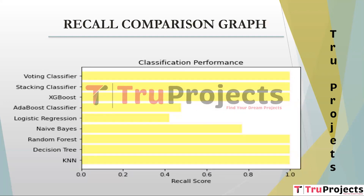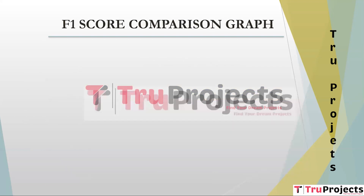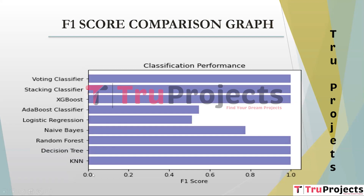The recall comparison graph plots algorithm names against recall scores. Recall, also known as sensitivity or true positive rate, measures the model's ability to correctly identify all relevant instances, calculated as the ratio of true positives to actual positive instances (true positives plus false negatives). The F-score comparison graph plots algorithm names against F-score, which is the harmonic mean of precision and recall, balancing both false positives and false negatives.